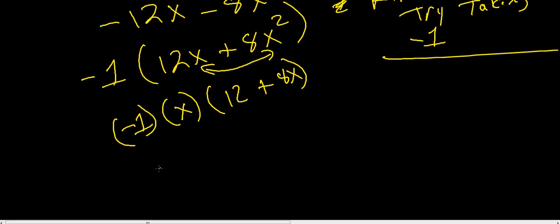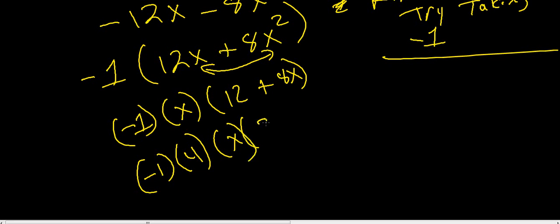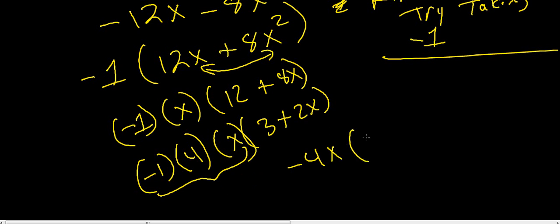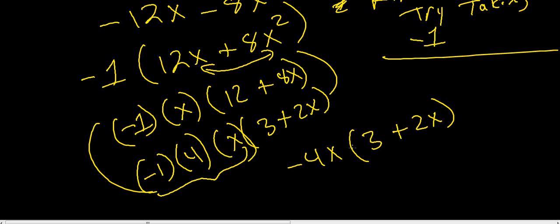The greatest common factor between 12 and 8 is 4. So now you've got negative 1 times 4 times x times the quantity 3 plus 2x. Multiplying those together gives negative 4x times the quantity 3 plus 2x. Let's double check by distributing: negative 4x times 3 is negative 12x, and negative 4x times 2x is negative 8x squared — that's what we started with.